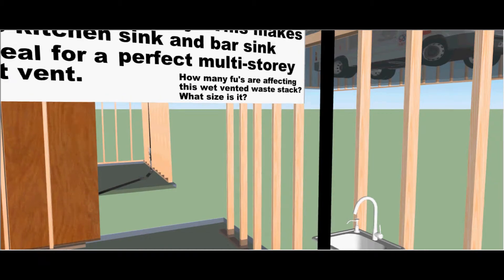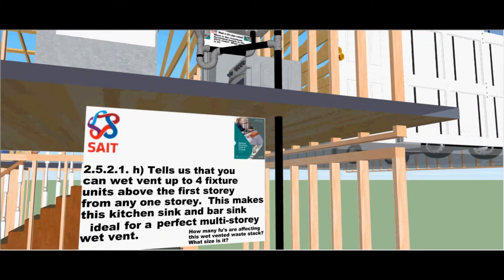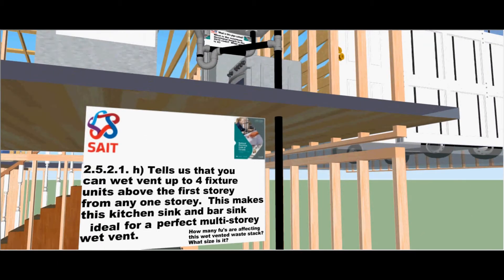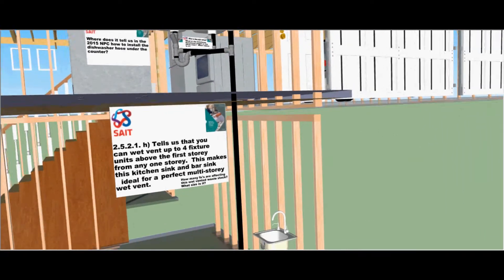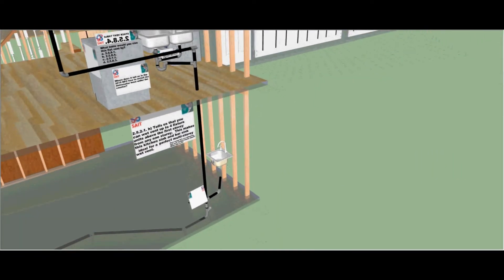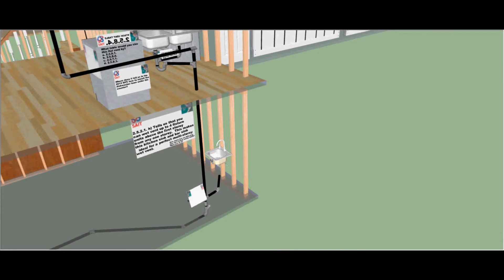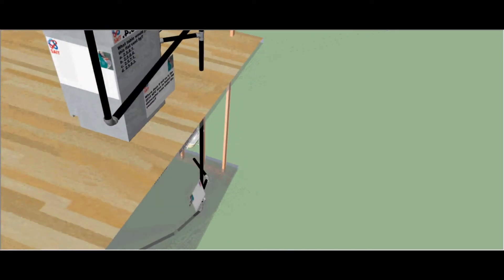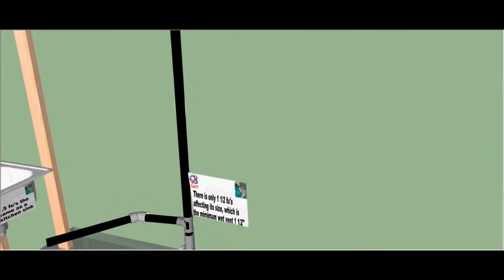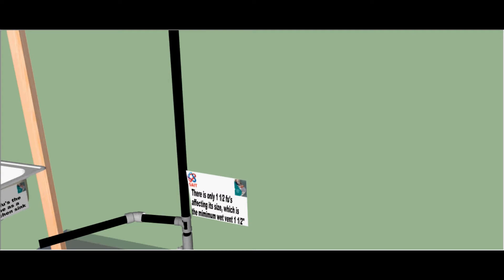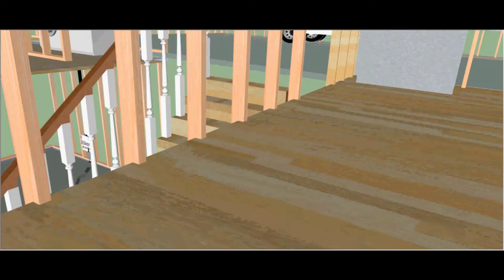How many fixture units are affecting this wet venting waste stack? What size is it? Let's zoom around and see how many fixture units are affecting it. Only one and a half fixture units affect its size. That's the minimum wet vent, one and a half inches.